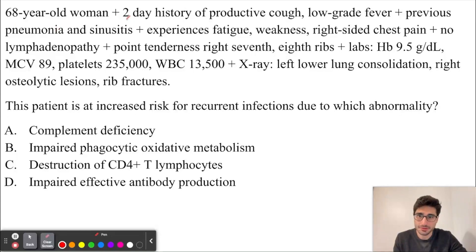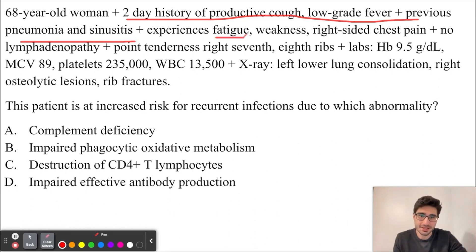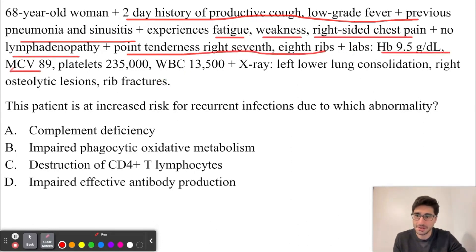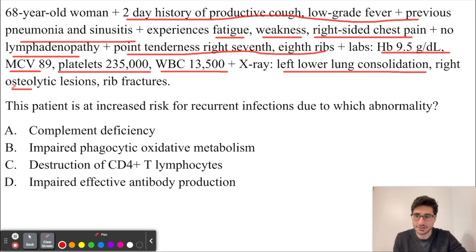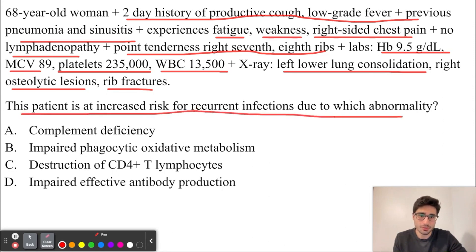In this question, we have a 68-year-old woman with a two-day history of productive cough, low-grade fever, previous pneumonia, and sinusitis. She's been experiencing fatigue, weakness, and right-sided chest pain. She has no lymphadenopathy. She has point tenderness in the right 7th and 8th ribs. Her labs show normocytic anemia; platelets are normal; white blood cell count is elevated at 13,500. The x-ray shows left lower lung consolidation and right osteolytic lesions and rib fractures. This patient is at increased risk for recurrent infections due to which abnormality?